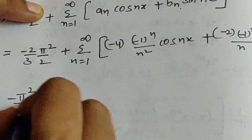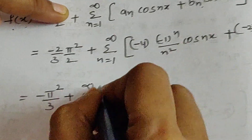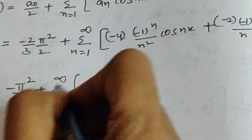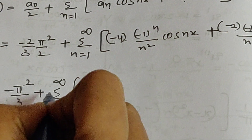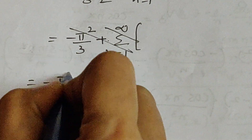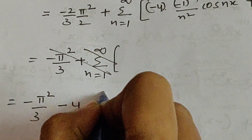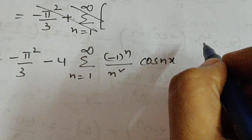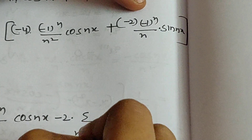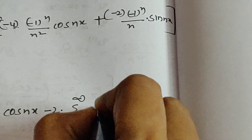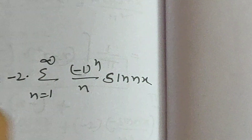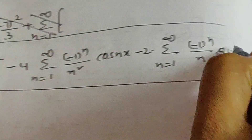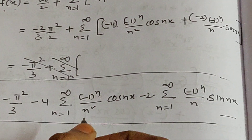Simplifying further: f of x equals minus pi square by 3 minus 4 times sigma n equal to 1 to infinity of (minus 1 whole power n by n square) cos nx, minus 2 times sigma n equal to 1 to infinity of (minus 1 whole power n by n) sin nx. This is the required Fourier series expansion of the function x minus x square.